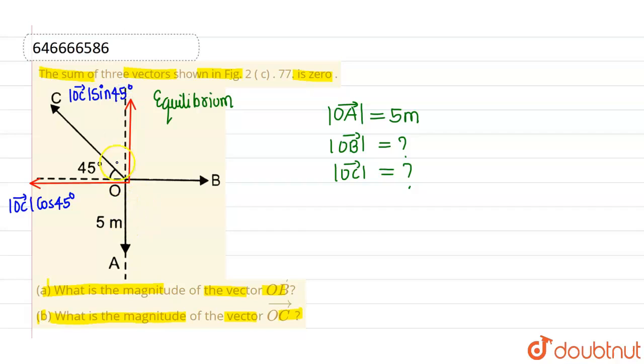Now for equilibrium, vertical sum of all the forces or sum of all the vectors in horizontal direction must be equals to zero and sum of all the vectors in vertical direction must be zero.